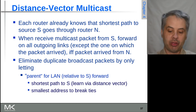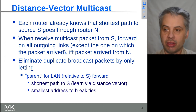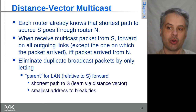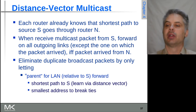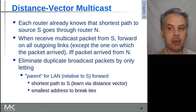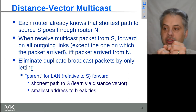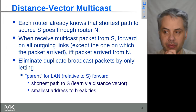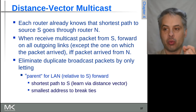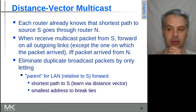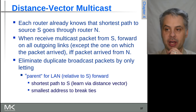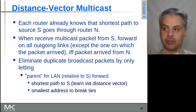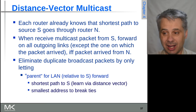It's possible to use a distance vector approach to this. Each router already knows how to get to some source address S through some router N. When we receive a multicast packet from S, we send it out all other links, but only if it came in from N — that is, from where we believe we can reach S via the shortest path. We assume it's symmetric: that our shortest path to S is also the shortest path S will take to reach us.